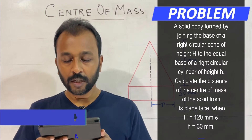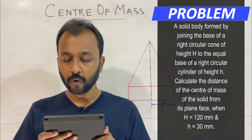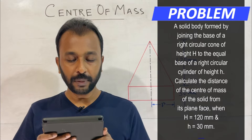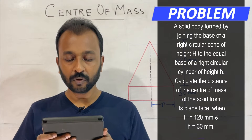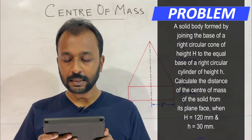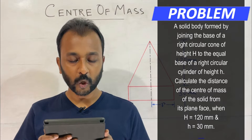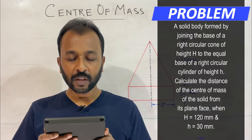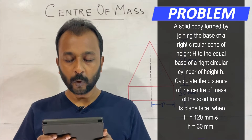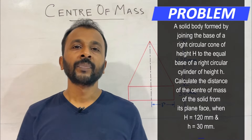A solid body is formed by joining the base of a right circular cone of height H to the equal base of a right circular cylinder of height h. We need to calculate the distance of the center of mass of the solid from its base plane, where H is equal to 120 mm and h is equal to 30 mm.